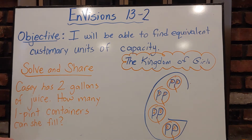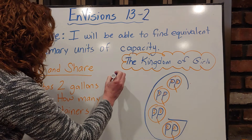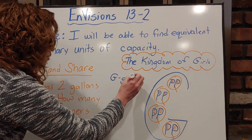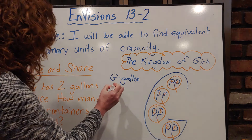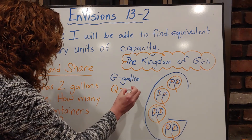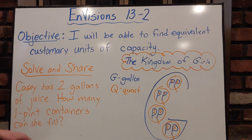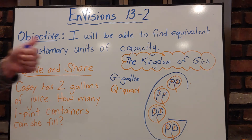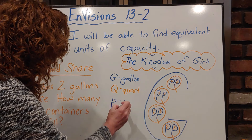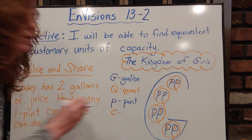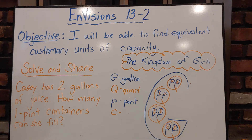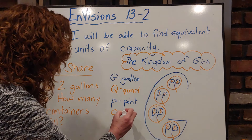Now you might be thinking, what does that have to do with capacity? Well, here it is. The G stands for gallon — most of you probably have a gallon of milk in your refrigerator, it's the big jug. The Q stands for quart. The P stands for pint. And the C stands for — can you guess? Something you use in baking or cooking. C stands for cup.